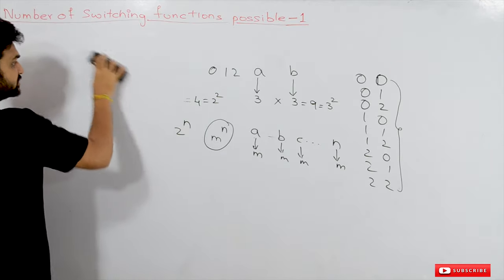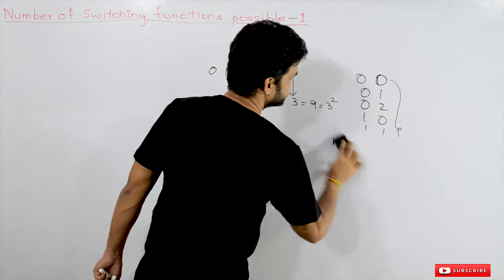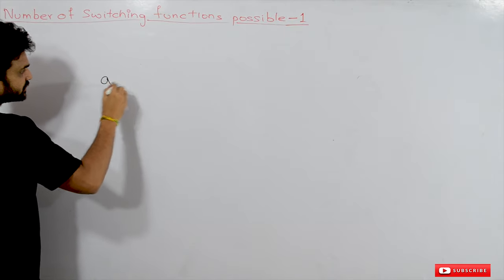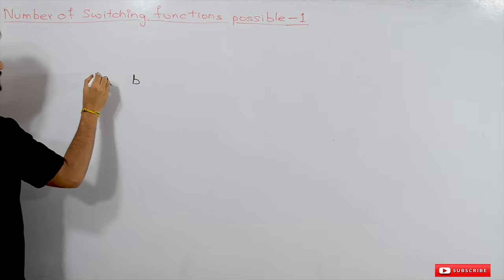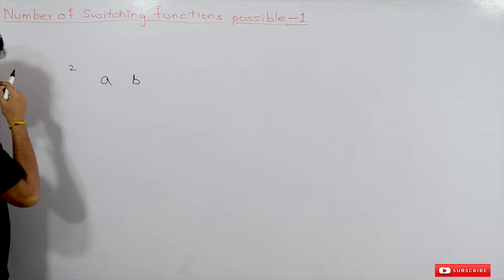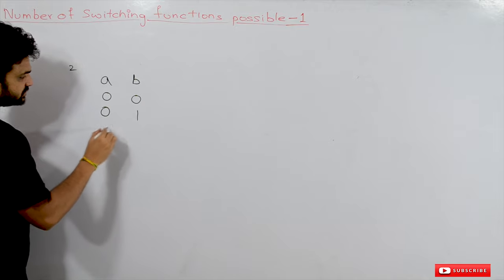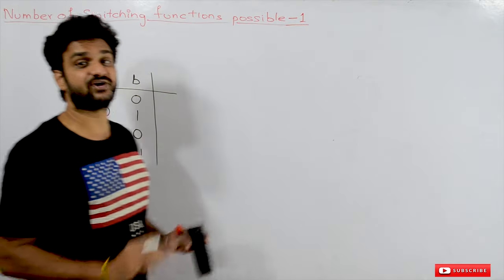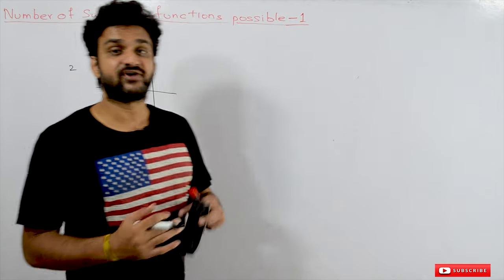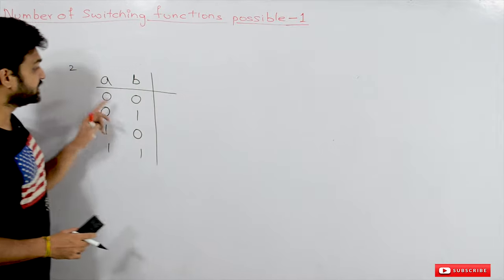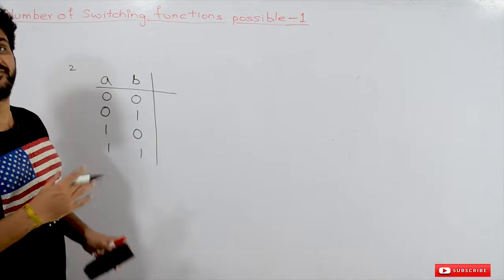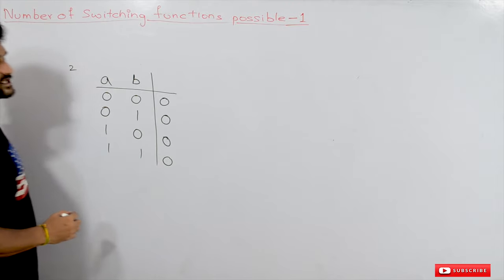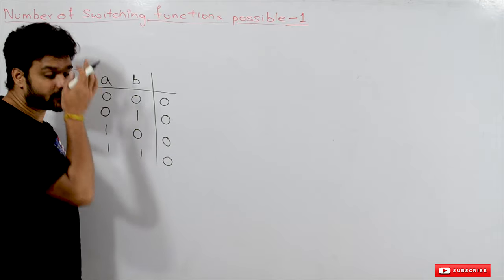Now, with these combinations, how many different functions are possible? This is a bit tricky to understand, so we will go very slowly. Given two variables where each variable is capable of storing two values, the different combinations are: 0 0, 0 1, 1 0, and 1 1. For example, if a user wants to produce a zero for any combination, the circuit has to produce a value of zero for all inputs — 0 0, 0 1, 1 0, and 1 1. Is this a function? Yes, it is.